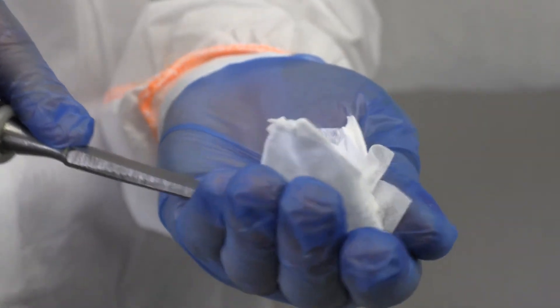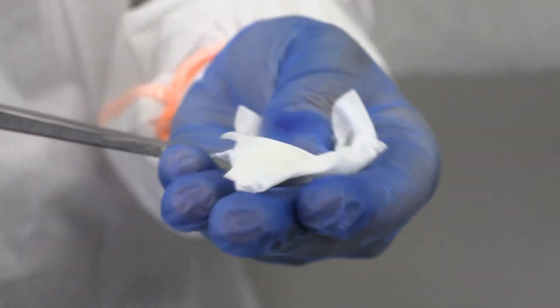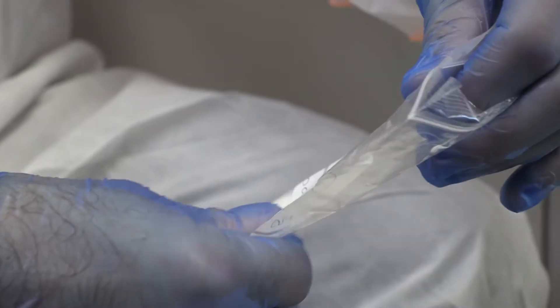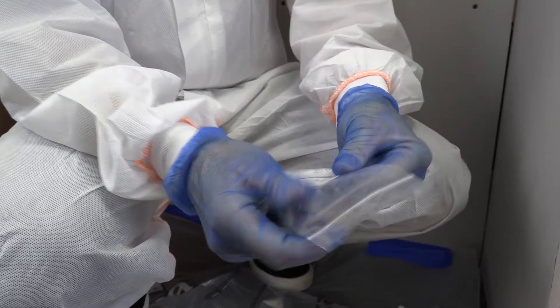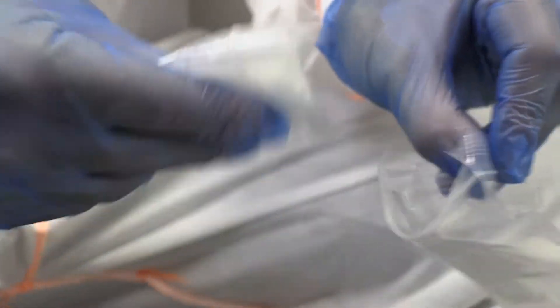Fold the sample into a wet wipe and place into a small labeled zip seal bag. Place inside a second labeled bag so that the sample is now double bagged.